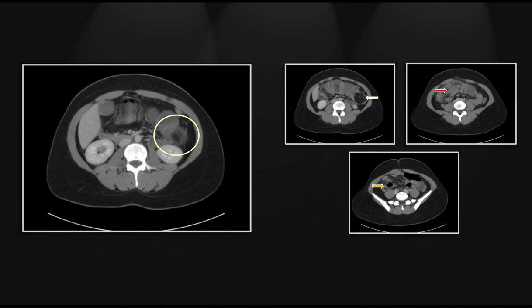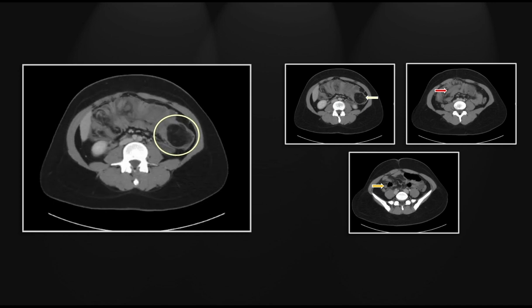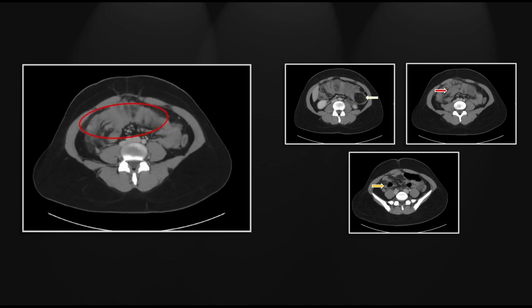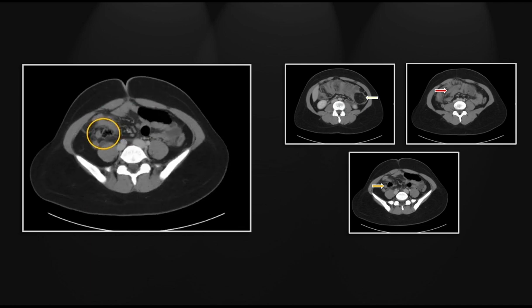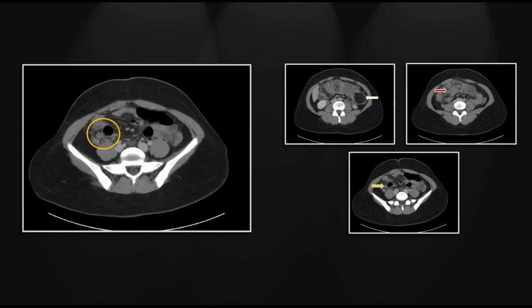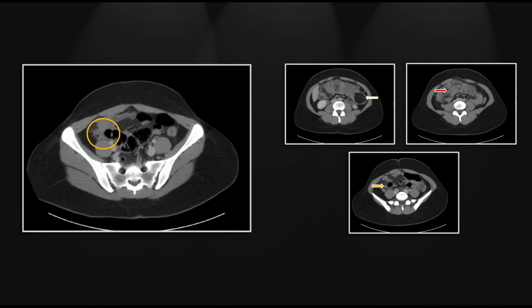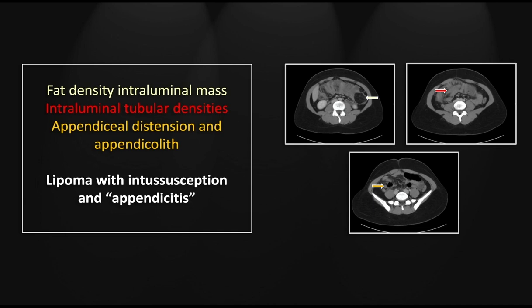There is that fat density. Here is the vascular pedicle and mesenteric fat of the intussusception. And here we'll see the appendix — dilated, thick-walled, and with an appendicolith — again meeting the criteria for acute appendicitis. Obviously, this patient may need surgery for the intussusception in any case. That is a lipoma with intussusception, a common lead point in adults, with secondary appendicitis.